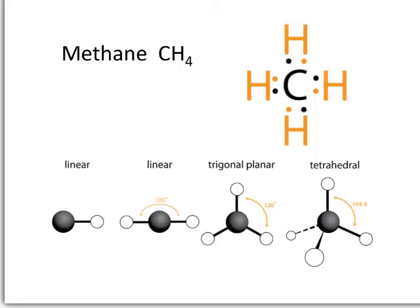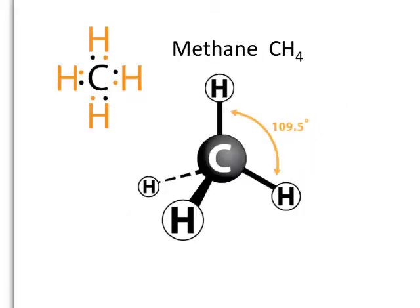Let's look at an example — here's methane, CH4. You can see that carbon is the central atom, and it has four domains around it, so it's going to take on a tetrahedral shape. None of those domains are lone pairs, so the molecule itself will also be tetrahedral. The angle between the bonds is going to be exactly 109.5 degrees.